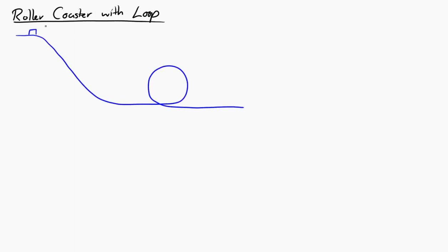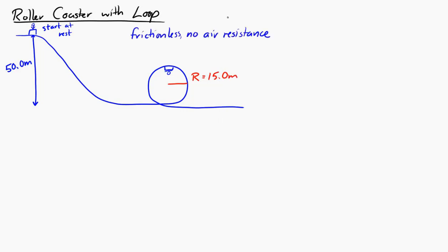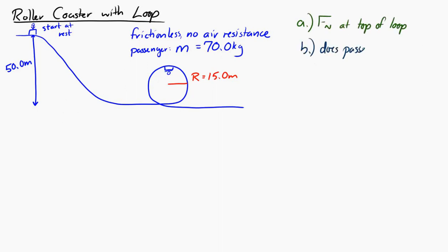Now let's look at a roller coaster with a loop. The car starts at rest at the top of a 50-meter hill, goes down through a loop of radius 15 meters on a frictionless track with no air resistance. There is a 70-kilogram passenger in the car. We want to find the normal force on the passenger at the top of the loop and determine if they feel heavier or lighter than normal.